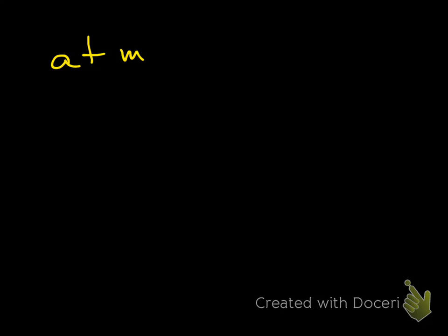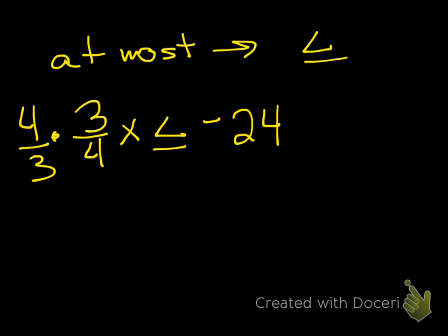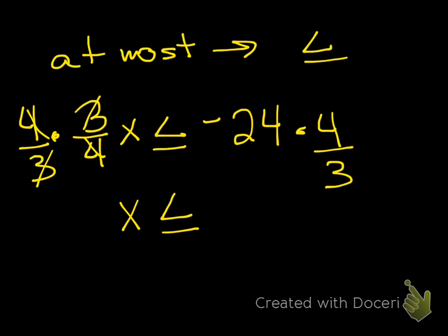Three-fourths of a number is at most — 'at most' means less than or equal to — negative 24. We're going to get rid of the 3/4 by multiplying by 4 over 3, and multiply the right side by 4 over 3 as well. These cancel and give you 1, so you have x is less than or equal to negative 32.